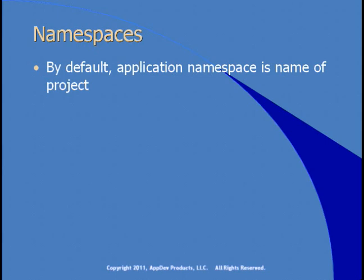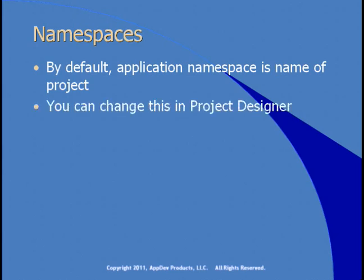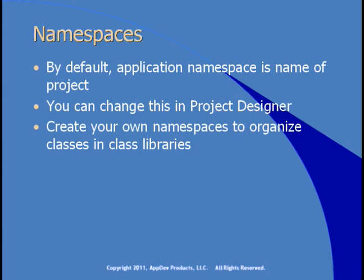When you create a project, the resulting application has a namespace. By default, the namespace is the same as the project name. You can change this in the Project Designer, or leave the default. If you're building a single application, you may or may not change it. But if you're organizing classes into class libraries in separate assemblies, you'll want to give thought to what you use for the namespace — a descriptive name that identifies where the libraries come from and possibly what they do. Let's see a demo of how to split classes into partial classes, how to nest them, and how to use namespaces.